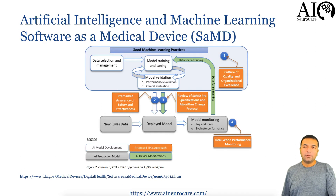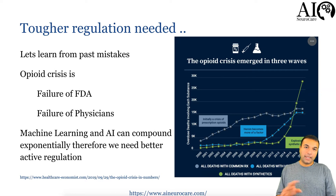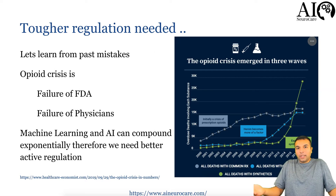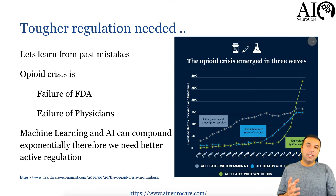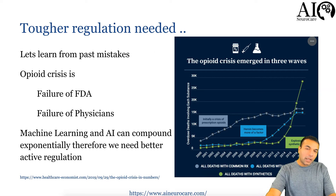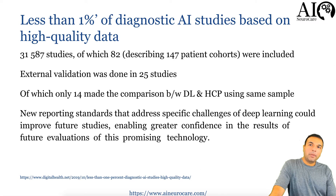FDA needs to really tighten regulation. After the opioid crisis — where we were approaching 30,000 deaths per year and FDA let it happen for so long — it's unbelievable. Both the FDA and physicians are responsible. But the bigger worry is that if AI is implemented as off-the-shelf box implementations without proper oversight, we could see a significant amount of trouble ahead. Rather than mislabeling a dog and a cat, we will have real lives on the line. Less than 1% of AI studies in healthcare are conducted accurately — with proper training sets, test sets, and external validation.